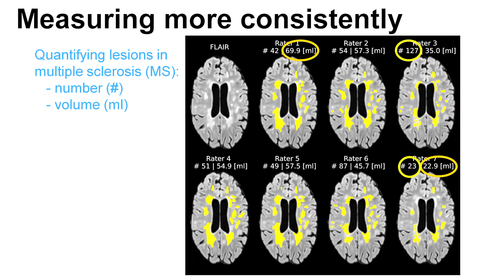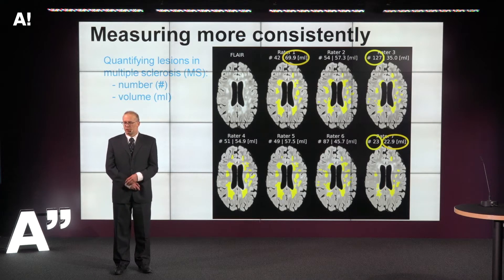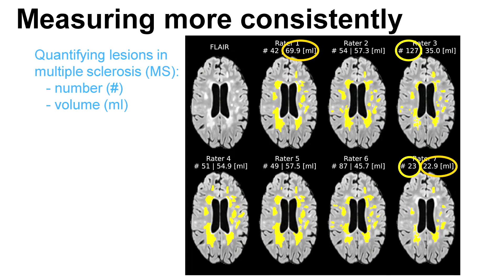Here's another example where AI can help to measure more consistently, in multiple sclerosis. What's important is that the brain has lesions — essentially a type of scar tissue — and both the number and volume of these lesions matter, especially as they evolve over time. Seven different human experts were asked to delineate these lesions, and there are enormous inconsistencies between them — up to three or four times more lesions or more volume between different raters.